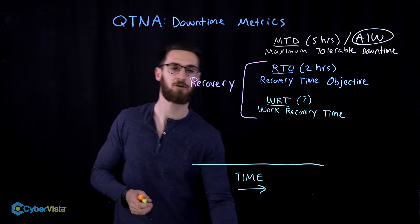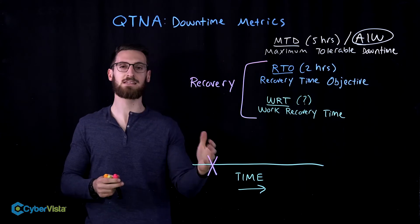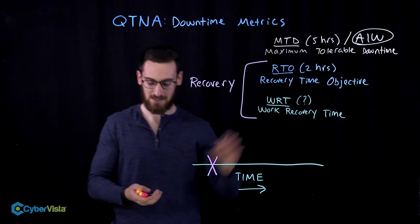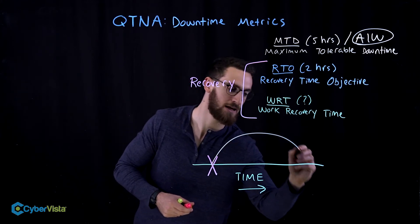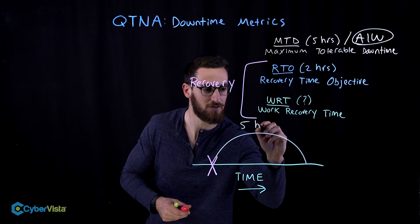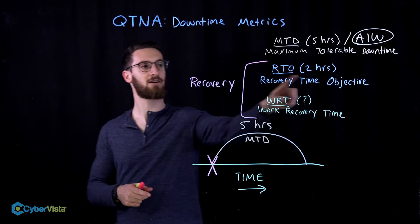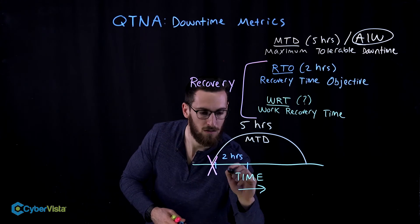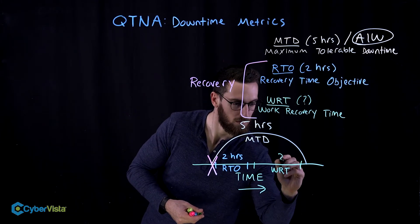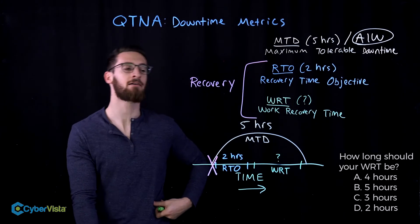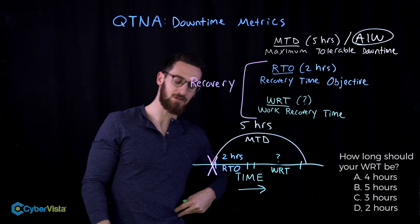Normal business operations are going on and then something bad happens — we have an incident. The COO has determined that our MTD is five hours, so we have to restore our critical server in five hours or else the business is going to suffer. We also know that the IT team said our RTO was two hours. So the question is: what's the WRT? We're bleeding out and we have five hours to fix this thing. If our RTO is two hours, what does our WRT have to be?